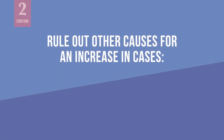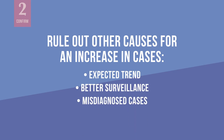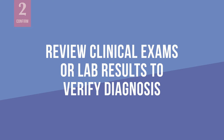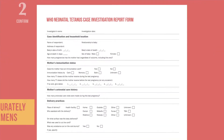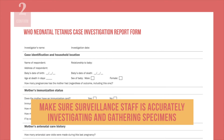Next, confirm the existence of an outbreak. It is critical to rule out other causes for the increase in cases, such as an expected trend, better surveillance, or misdiagnosed cases. Review any clinical exams or lab results to verify the diagnosis for suspected cases of the disease. Make sure the disease surveillance staff is accurately completing a disease-specific case investigation form for each suspected case and correctly gathering specimens for lab work if needed.